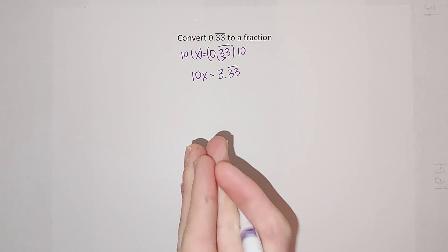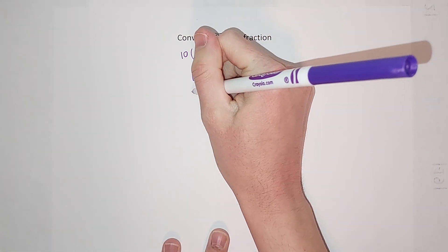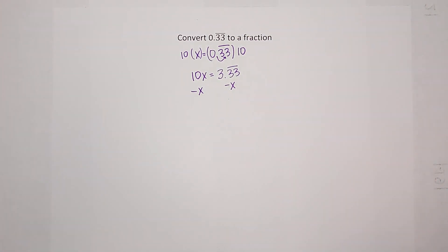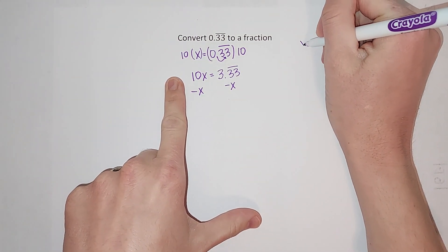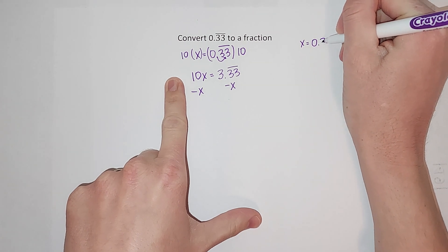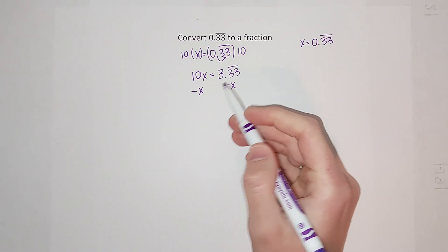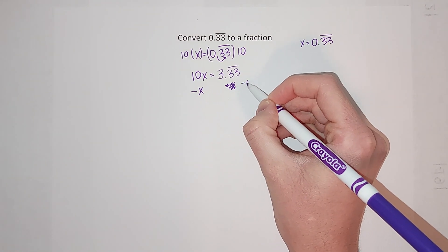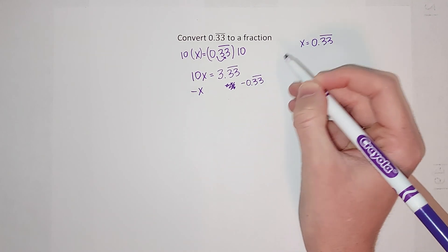So the next thing we're going to do is we're going to subtract x from both sides. So I'm subtracting x from this side and I'm subtracting x from this side. But if you remember from the very beginning, what did we say x was? x is 0.33 repeating, right? So I'm writing it as x on this side. I'm actually going to write it as 0.33 repeating on this side, but it's the same thing.